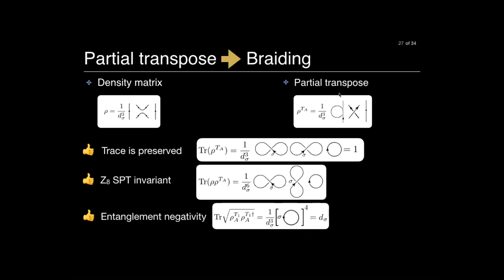Negativity is just contracting ρ^T with itself. This quantity doesn't have any sign, and it gives the quantum dimension.